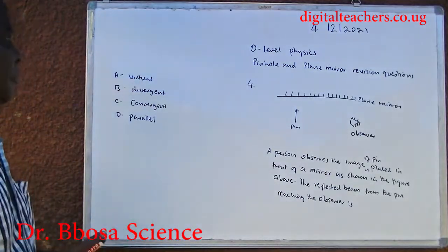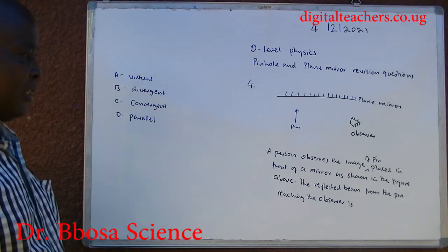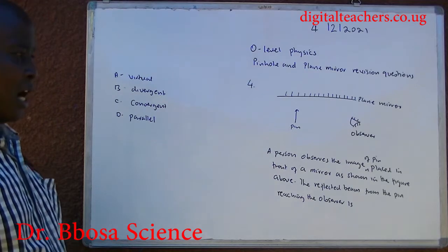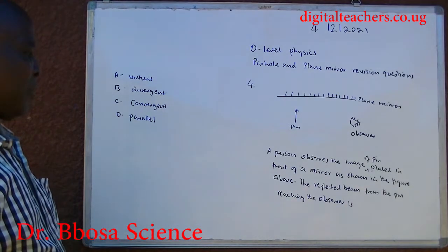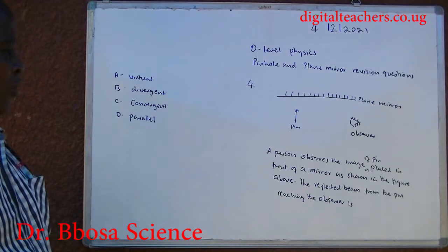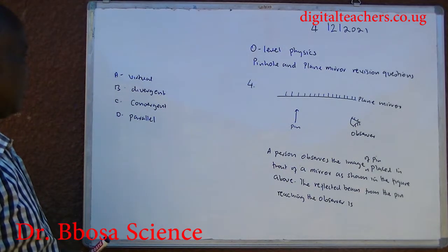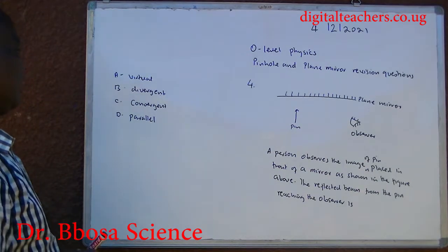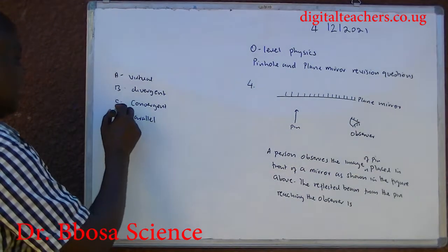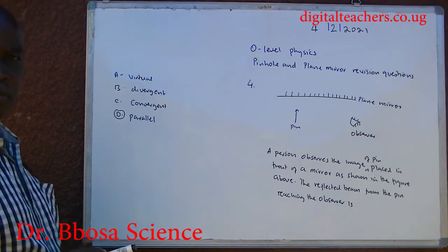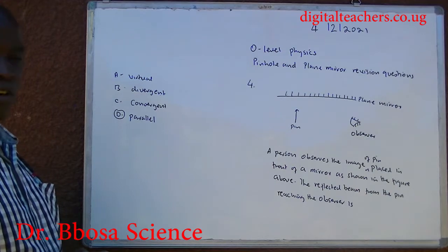Number four: a person observes the image of a pin A placed in front of a mirror, as shown in the figure. The reflected beam from the pin reaching the observer is A, virtual; B, divergent; C, convergent; D, parallel. You can pause and answer. The answer is D, parallel. Reflection on a plane mirror produces a parallel beam.